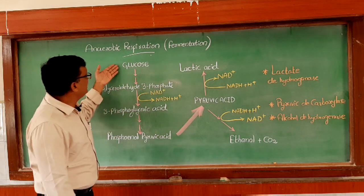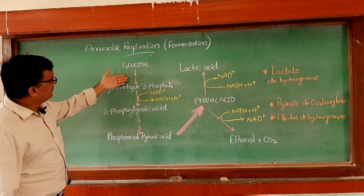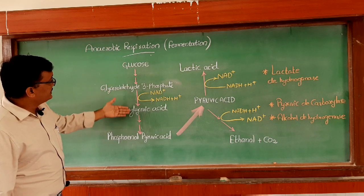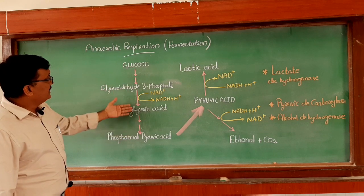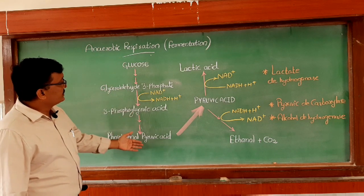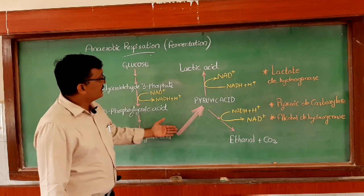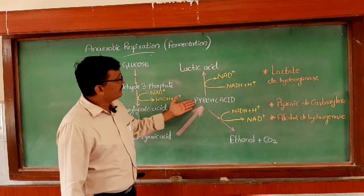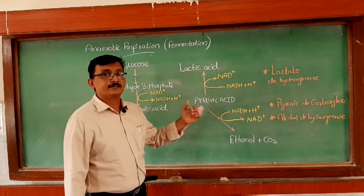Here, if you see the glucose molecule, in a series of steps it undergoes partial oxidation and finally produces two pyruvic acid molecules.